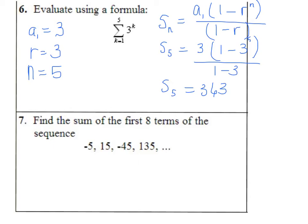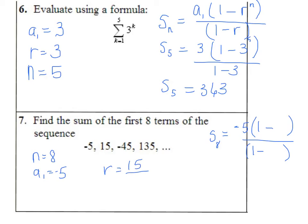S sub 8: a sub 1 is negative 5, n is 8, and r is 15 over negative 5 which is negative 3. When I put in r, I'm going to have negative 3 to the eighth power in the numerator and one minus negative 3 in the denominator.